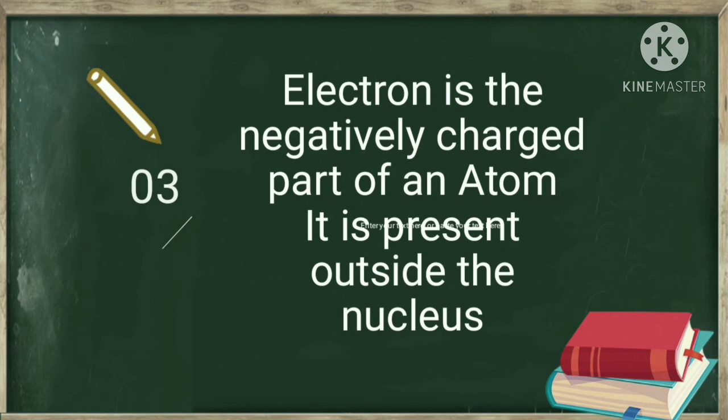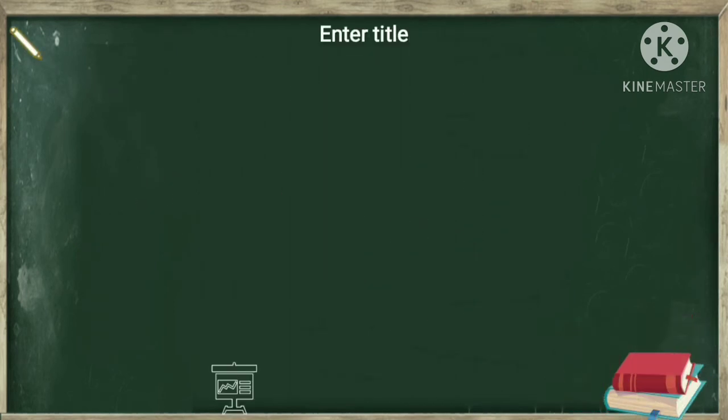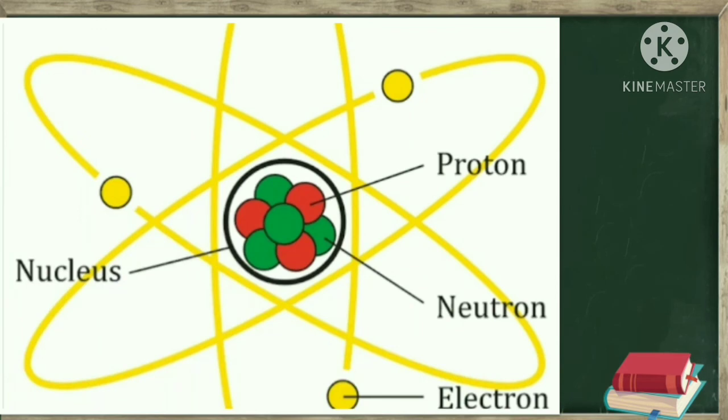Electrons revolve around the nucleus. Coming to the basic structure of an atom, the central part of an atom is known as nucleus. The protons and neutrons are combinedly present inside the nucleus and electrons revolve around the nucleus.